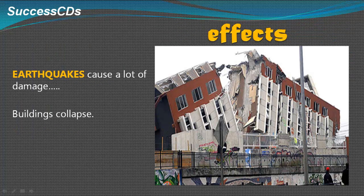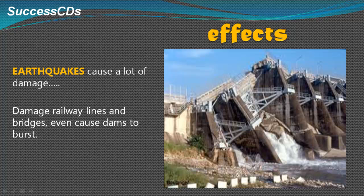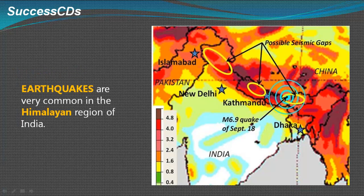Earthquakes cause a lot of damage. Buildings collapse, roads get damaged, railway lines and bridges are damaged, and earthquakes can even cause dams to burst. Earthquakes are very common in the Himalayan region of India.